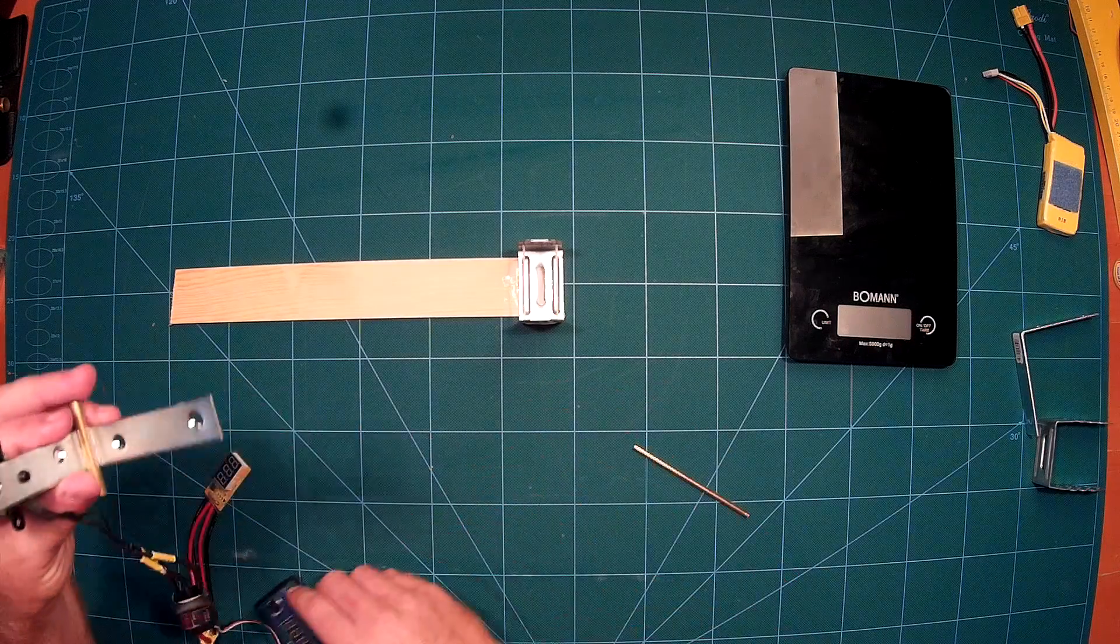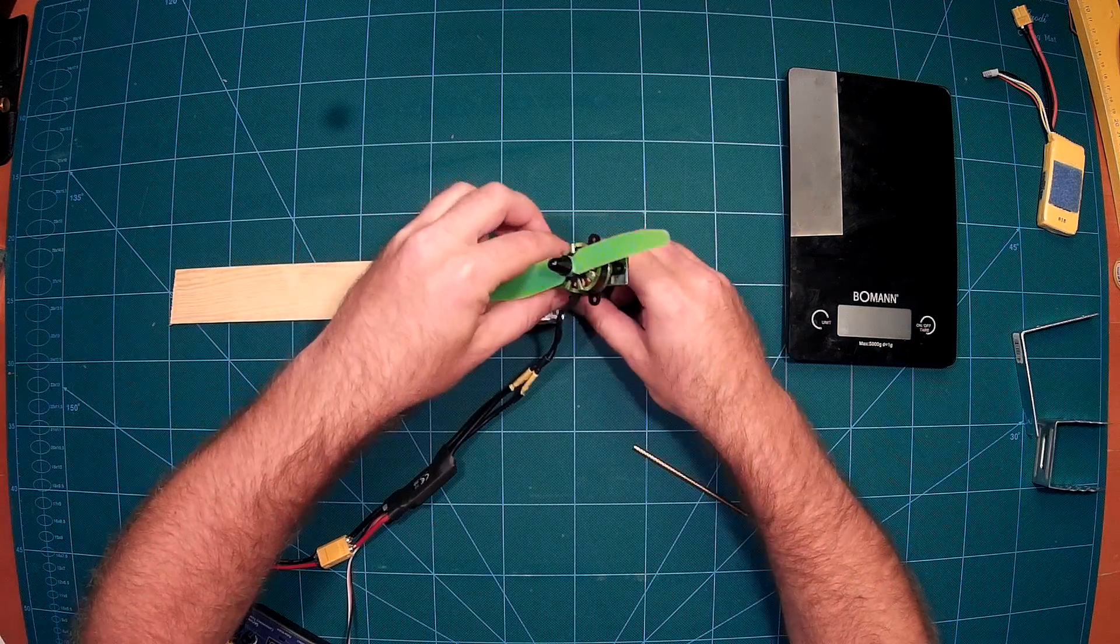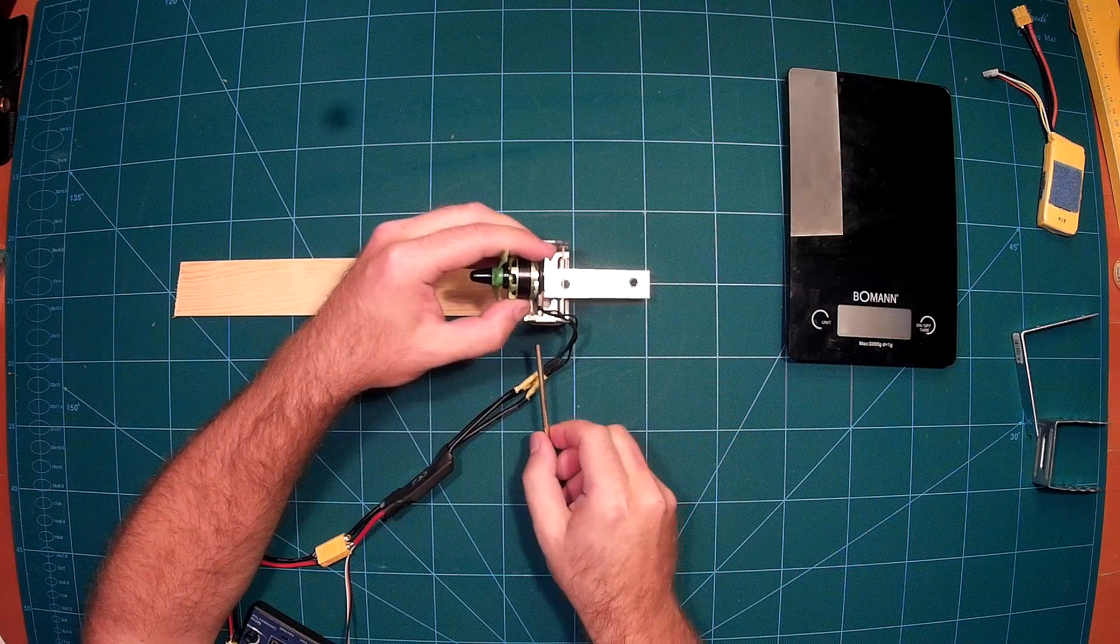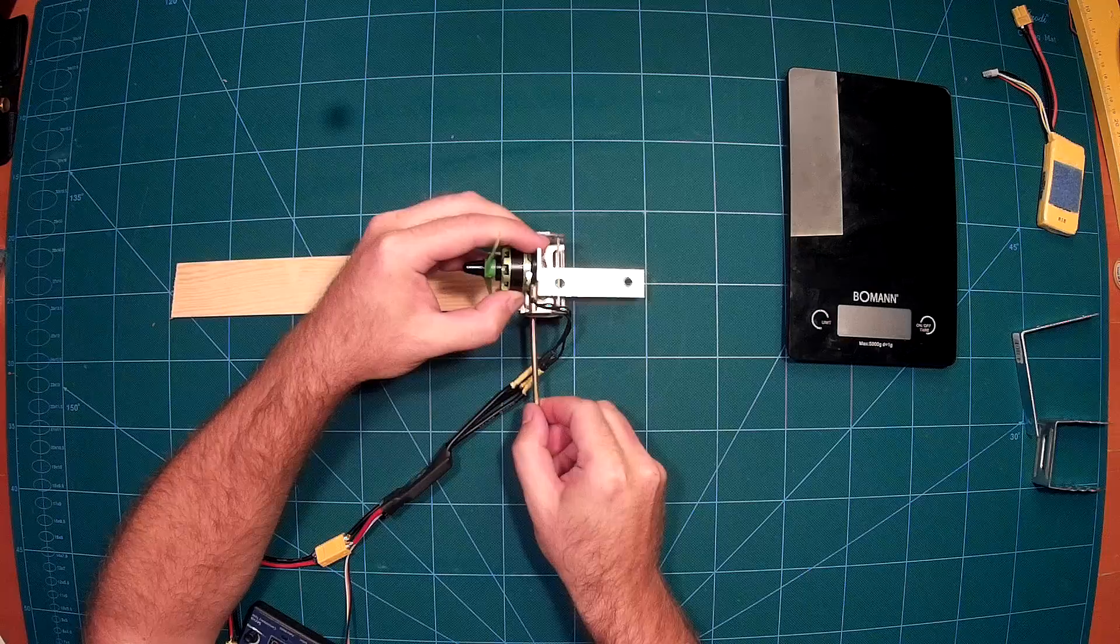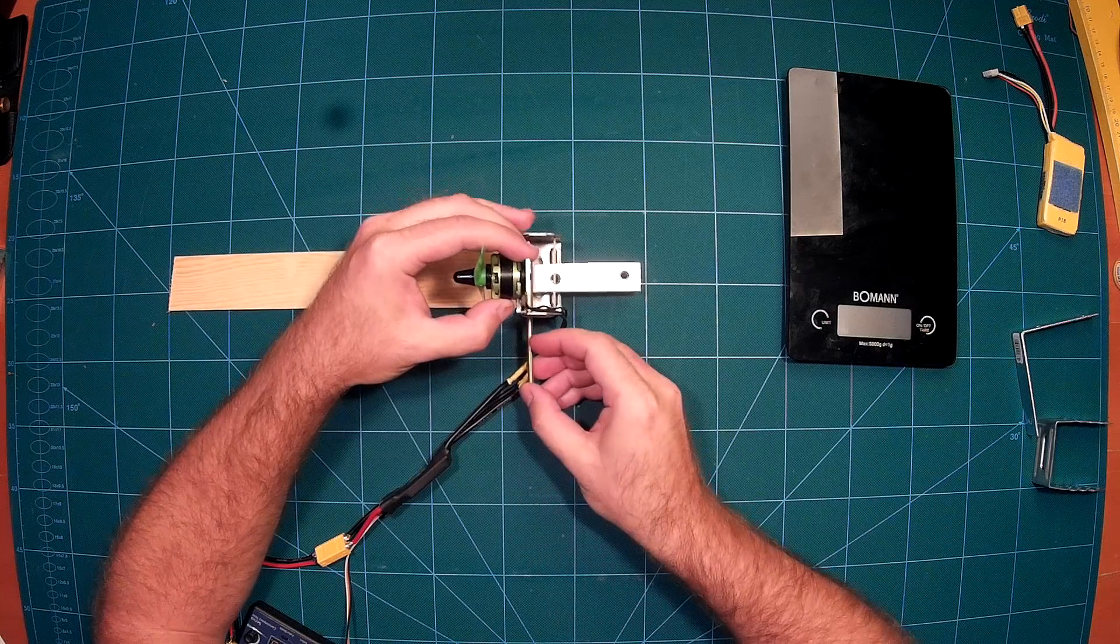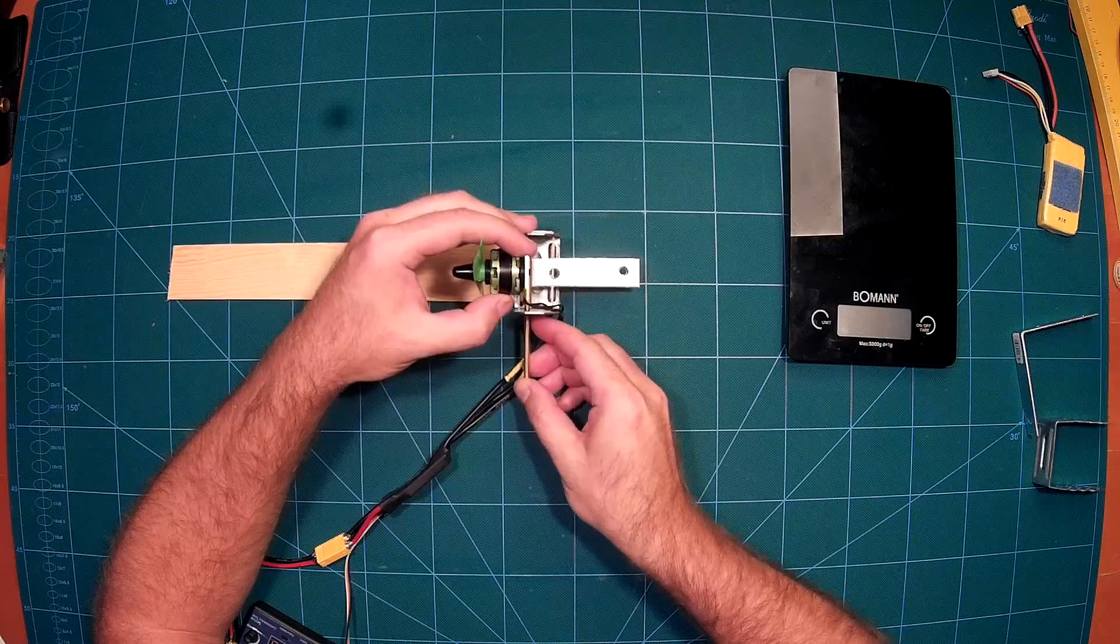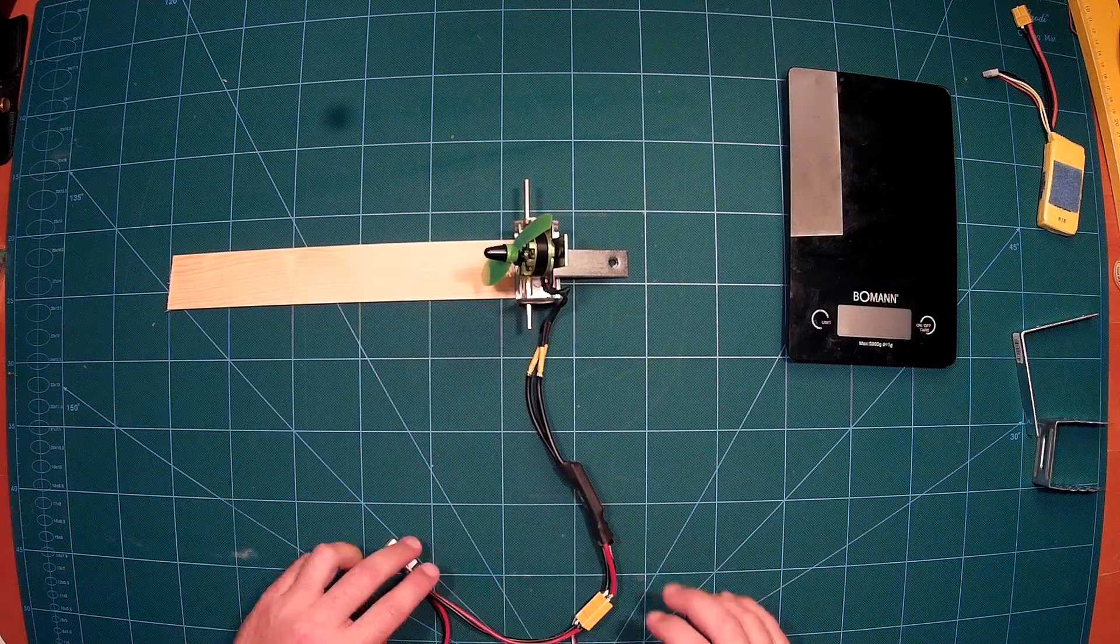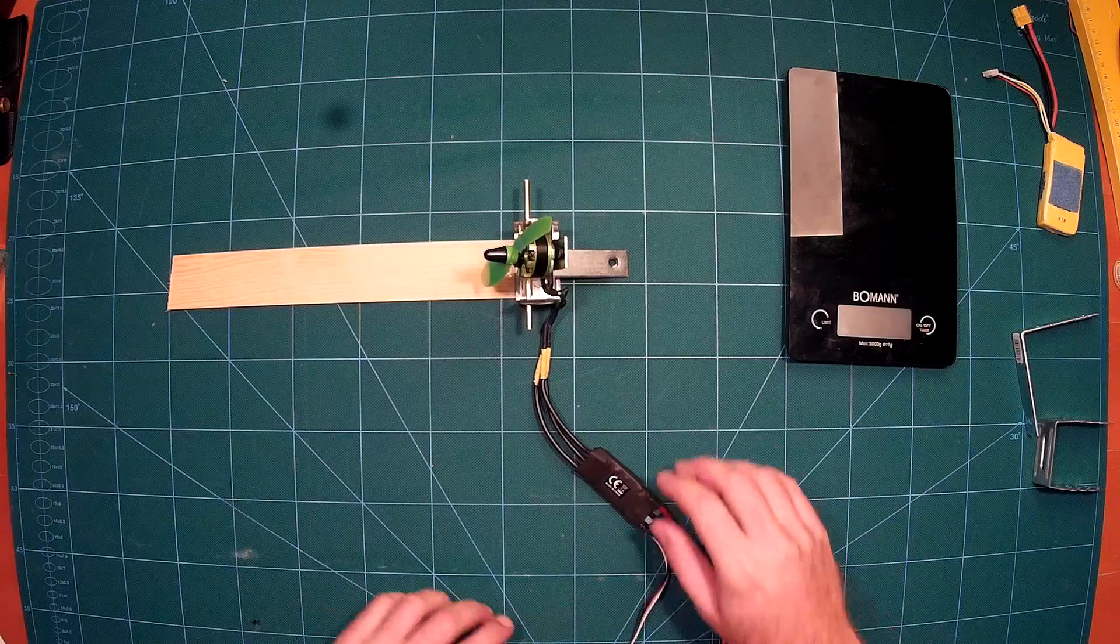Once you have that, you can simply put that in, use this rod and go through the hole of the U bracket and through the tube and go out at the other side, and basically you are done. So this is your thrust stand.